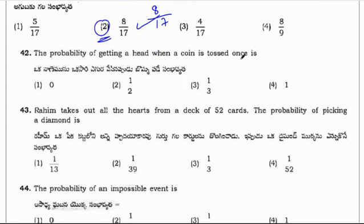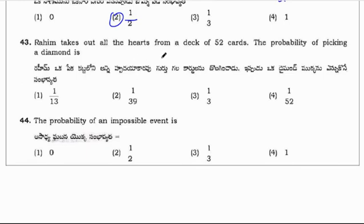Probability of getting a head when a coin is tossed is 1/2, and tail is also 1/2. Next: Line takes out all the hearts from a deck of 52 cards. The probability of picking a diamond? There are 13 hearts in the deck, so 52-13 = 39 remaining. Out of 39, there are 13 diamonds. So 13/39 = 1/3. The correct option is option 3, 1/3.